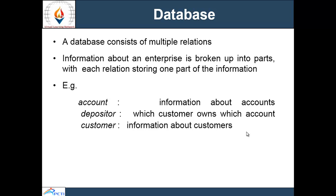A database consists of multiple relations, and information about an enterprise is broken up into different parts, with each relation storing one part of the information. For example, accounts department stores information about accounts, depositor stores which customer owns which account, and customer relation stores information about other customers.